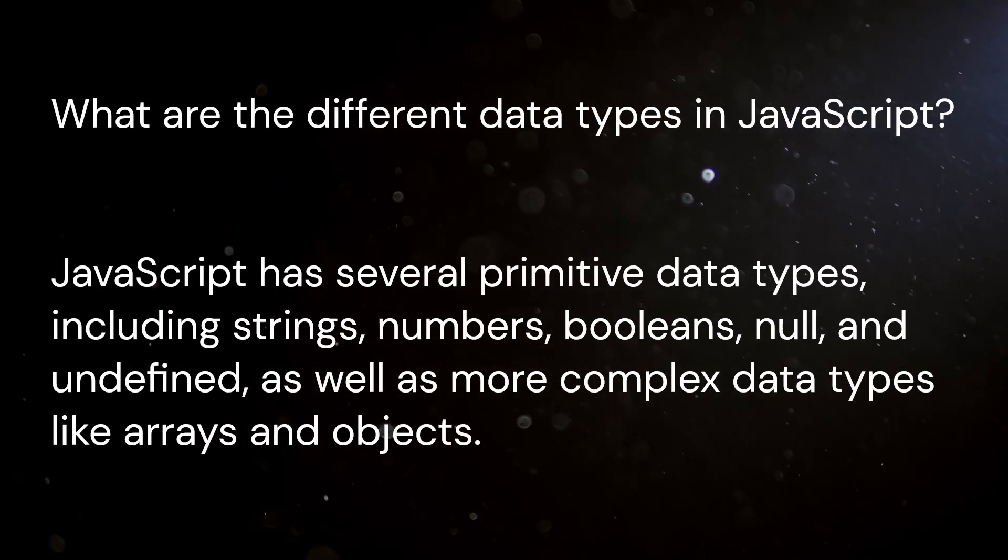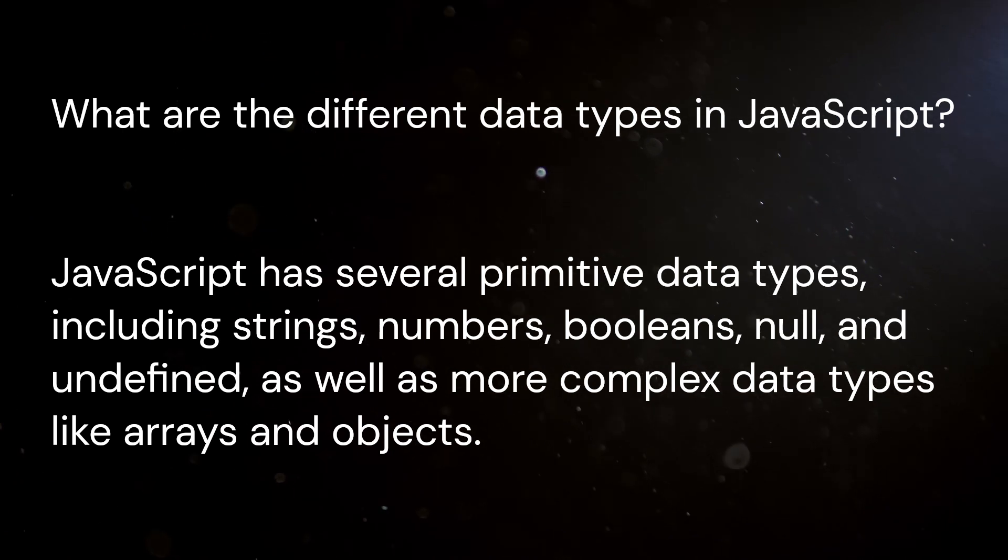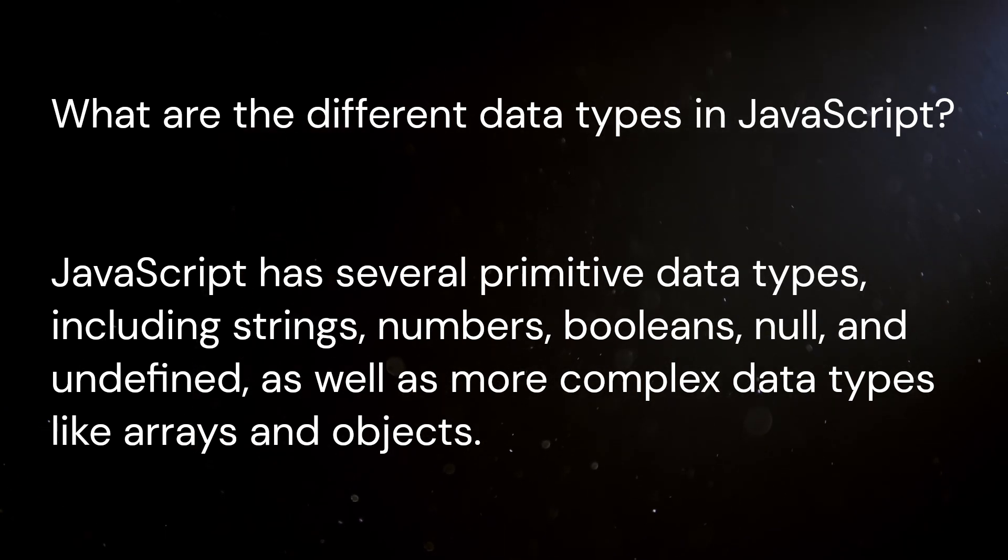9. What are the different data types in Javascript? Javascript has several primitive data types, including strings, numbers, booleans, null, and undefined, as well as more complex data types like arrays and objects.